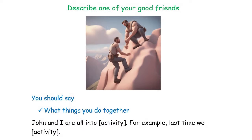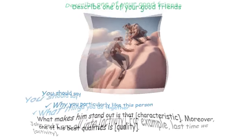Next, what things you do together. Here is our speaking template: John and I are all into — and then describe one particular activity. For example, last time we — and talk about one activity that both of you were involved in.